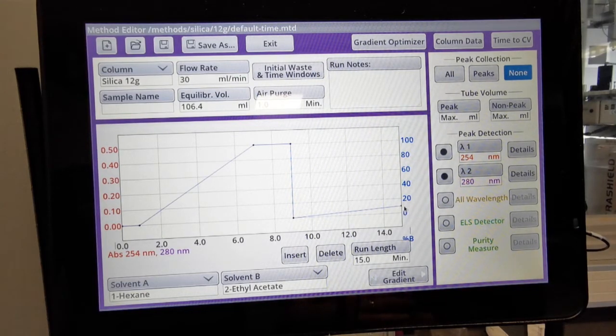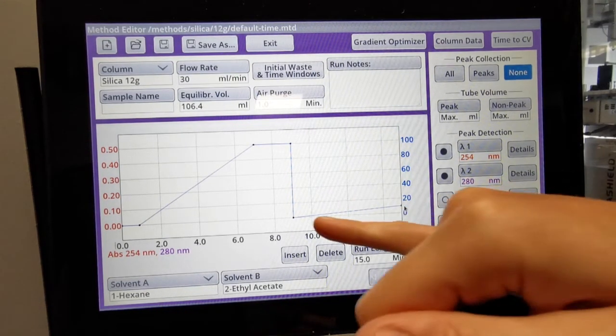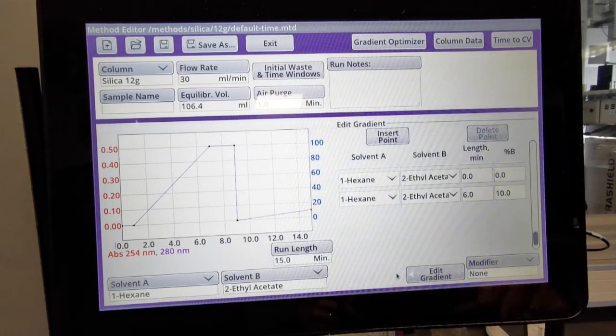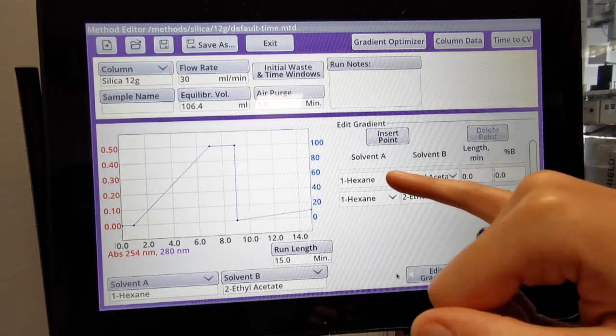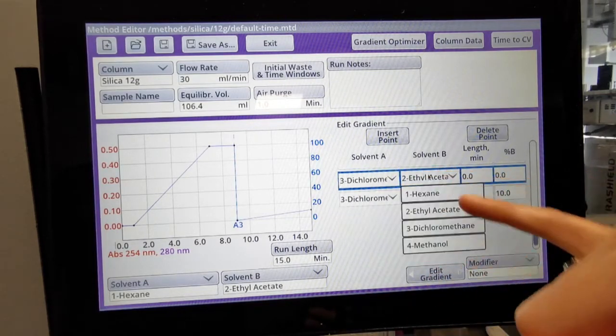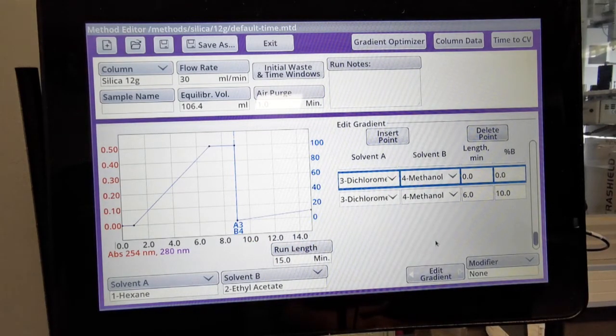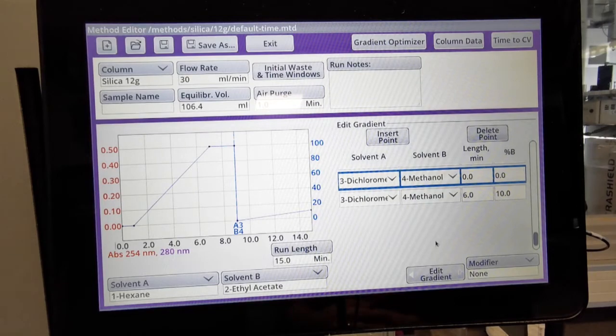In order to change this latter half of the gradient, I go into edit gradient and where it's set at zero here I just switch to DCM methanol. And as you can see here, from that point on it's switched from your hexane ethyl acetate to DCM methanol in order to elute your compound.